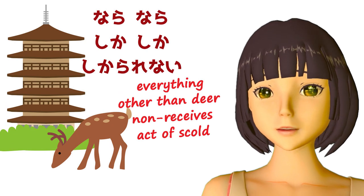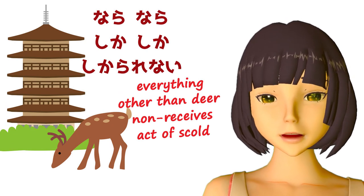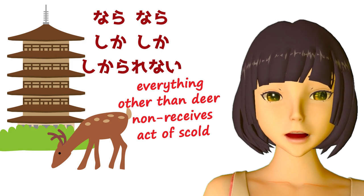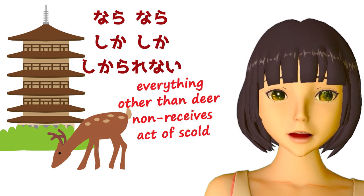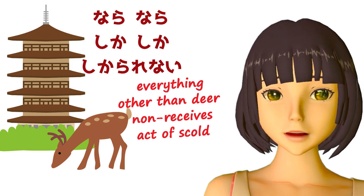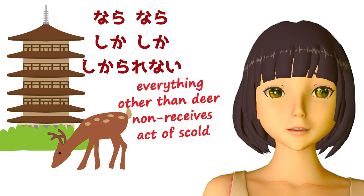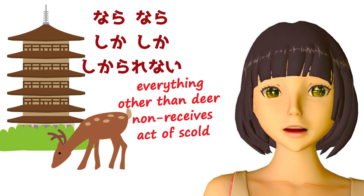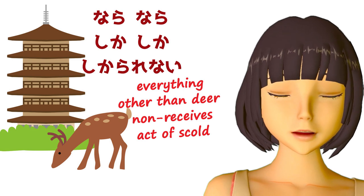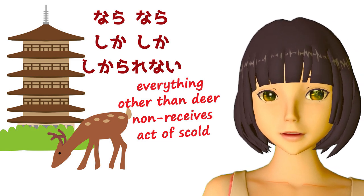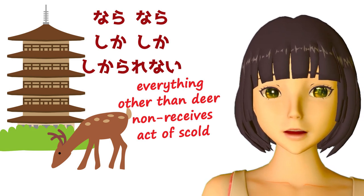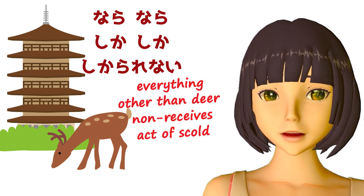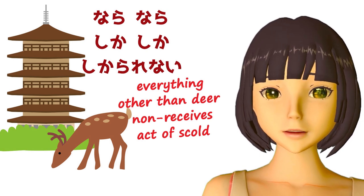In the deer sentence, which looks a little more complicated, it's exactly the same thing. Nara-nara shika-shika shikararenai: if it's Nara, everything other than the deer are not scolded. So again, we're selecting the deer, inverting the selection to everything other than the deer, and that becomes the eikar of the sentence, which is not scolded.